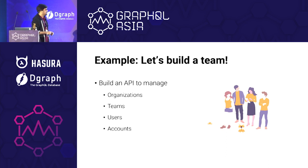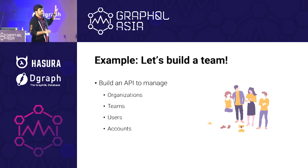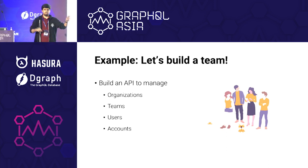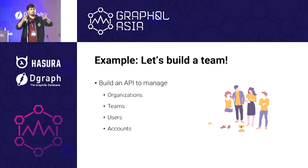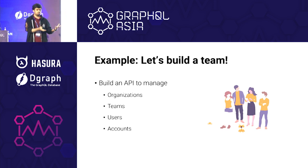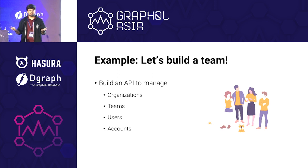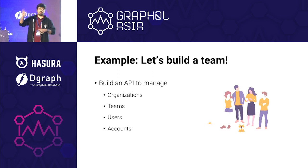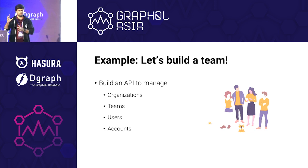To understand this better, let's take an example. We are trying to build a model that has one organization — for example, Postman is an organization. It has multiple teams within the org. Each team has certain employees or users. Users can have multiple accounts, and users can also belong directly to the org, like the CEO, who does not belong to any team but directly to the org.